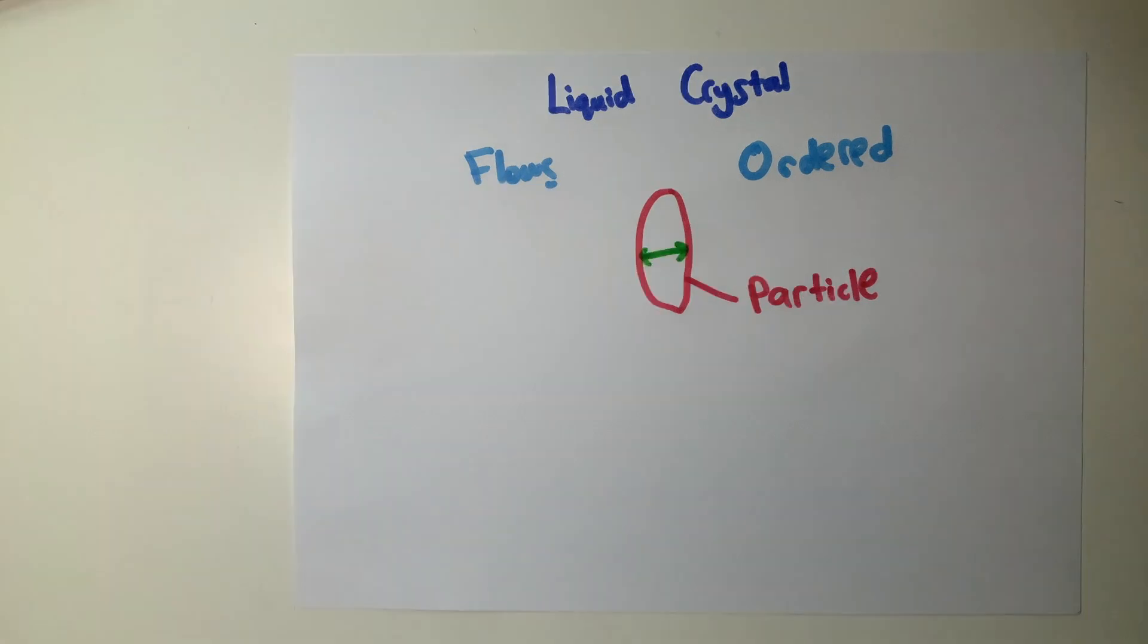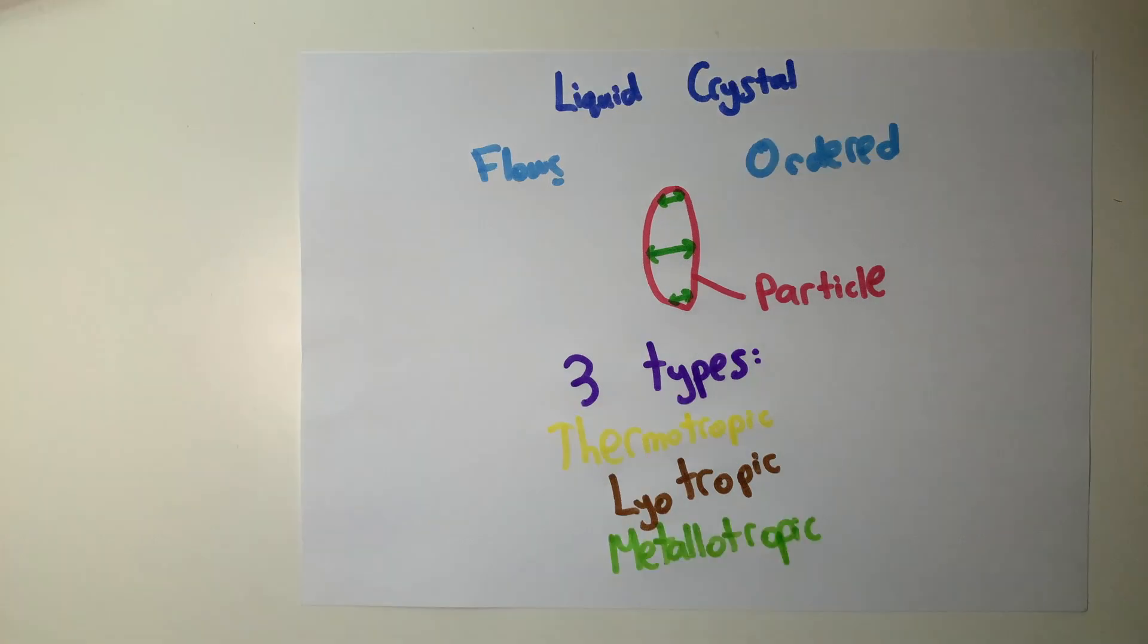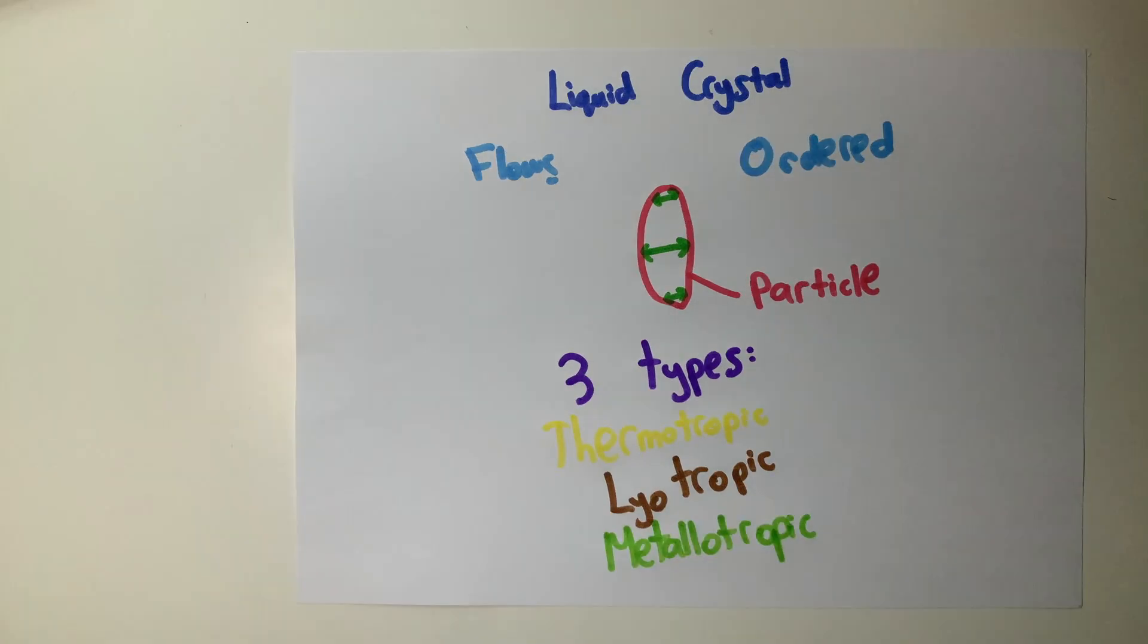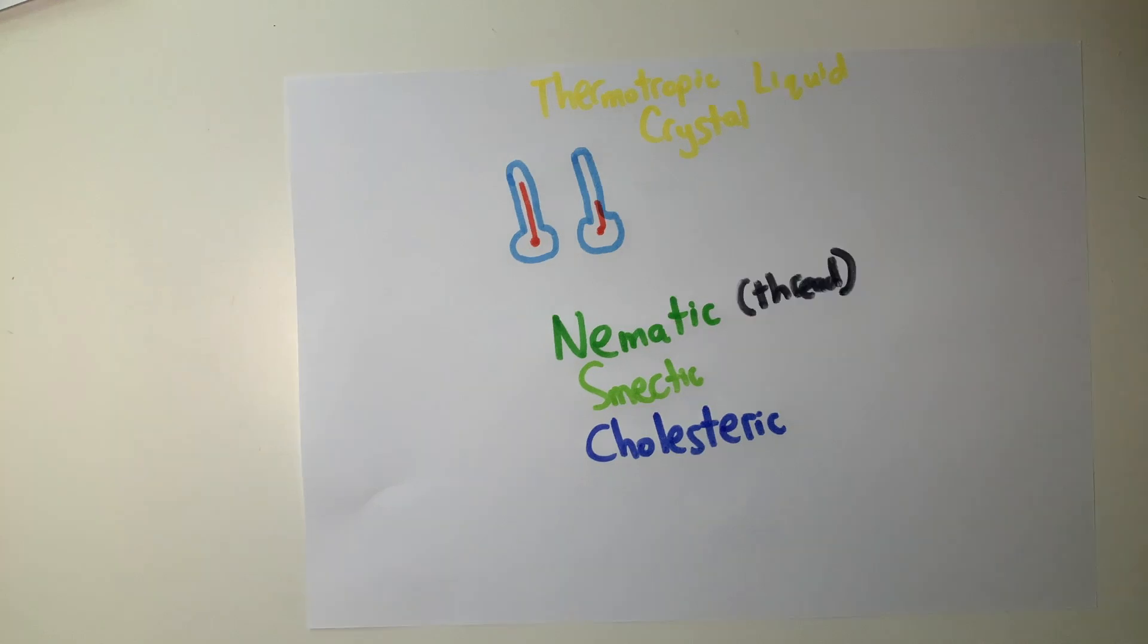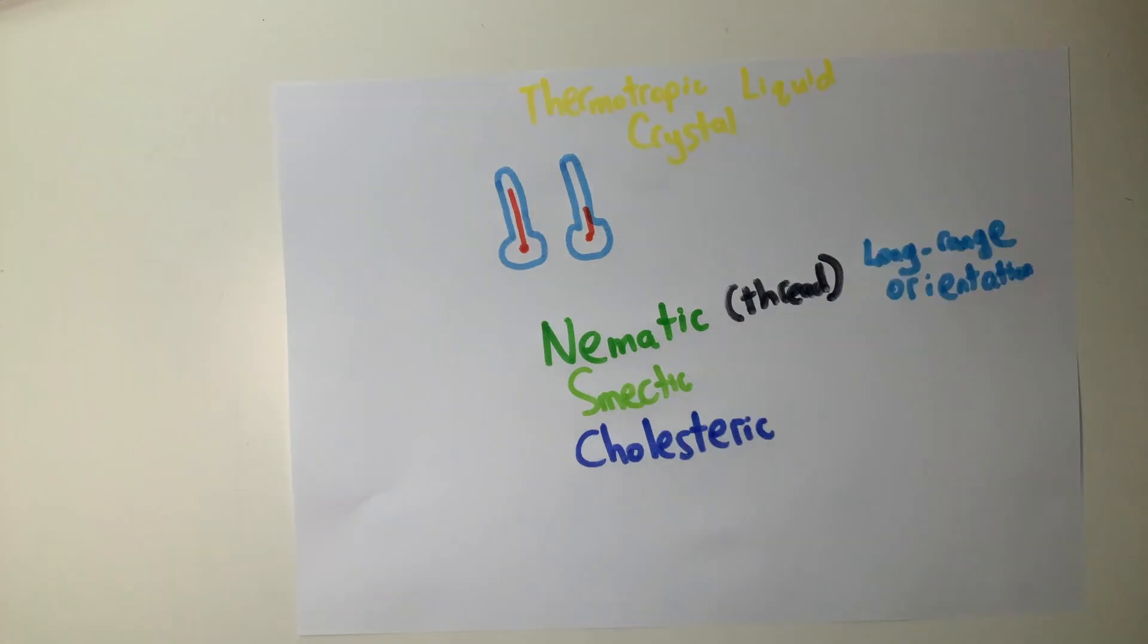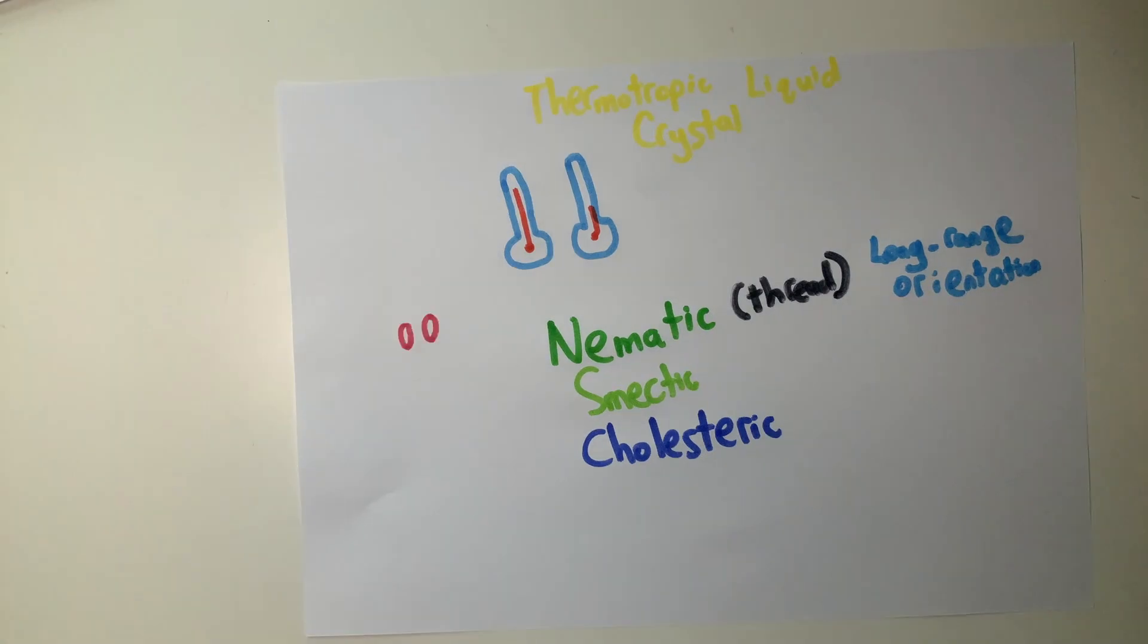There are three types of liquid crystals: thermotropic, lyotropic, and metallotropic. Thermotropic liquid crystals are liquid crystals that form from temperature differences. There are three main types of thermotropic liquid crystals: nematic, smectic, and cholesteric. Nematic liquid crystals, or thread-like liquid crystals, contain molecules of only long-range orientation with no positional order. Nematic liquid crystals are the simplest liquid crystals.